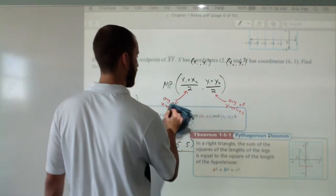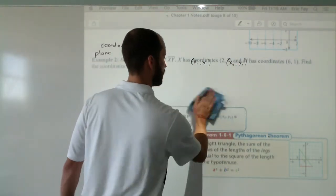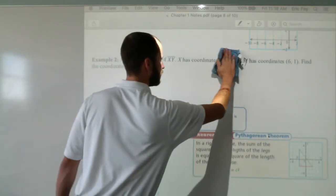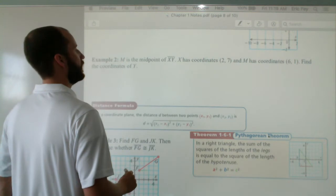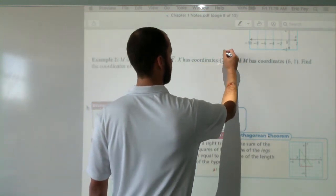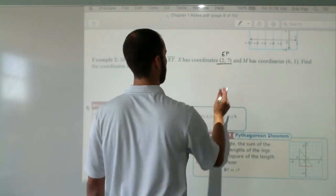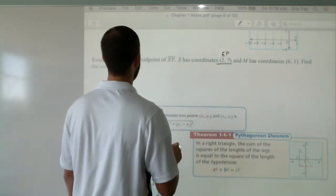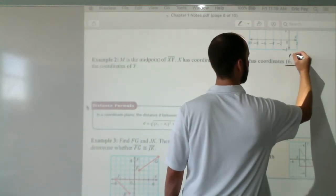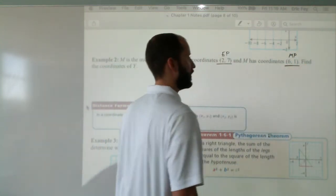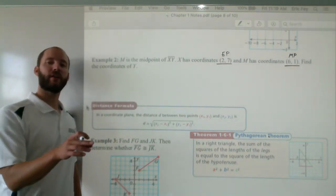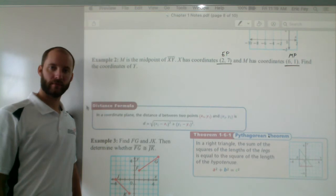Now let's change it up a little bit. Let's say they didn't give you the coordinates of the endpoints. Let's say they gave you one of the endpoints right here. That's an endpoint of x, y. X is those coordinates. And then m, the midpoint, they gave you that. Now find the coordinates of y, the other endpoint.